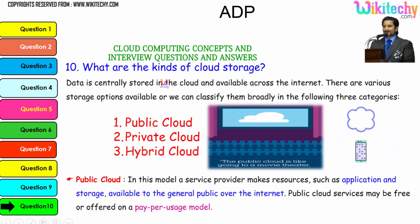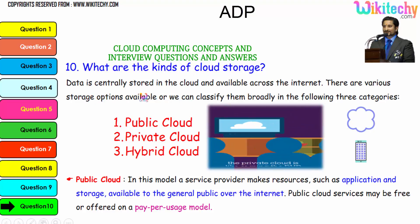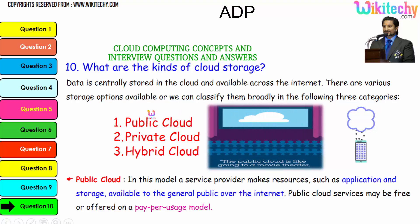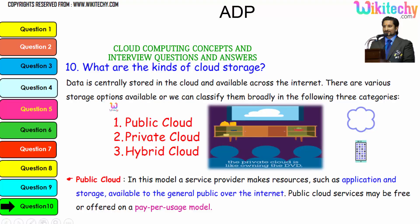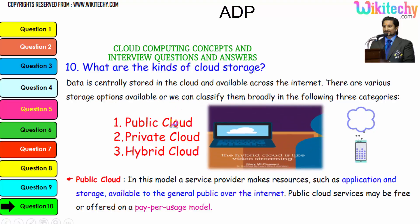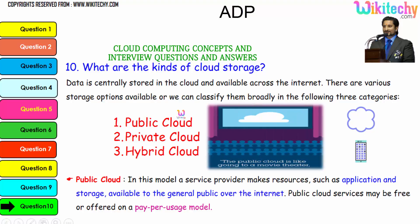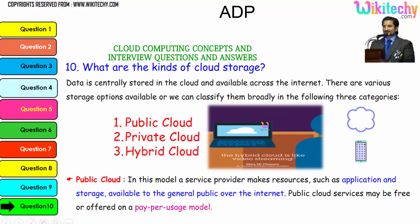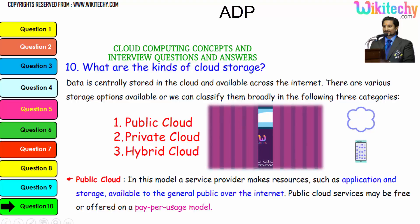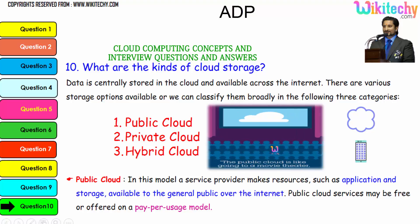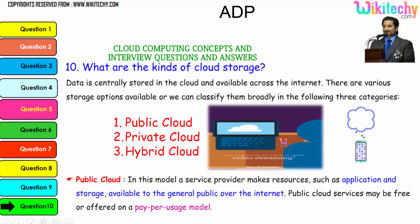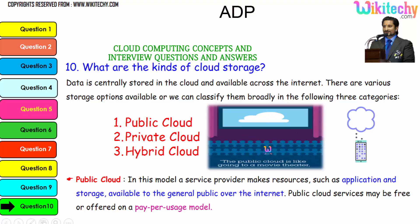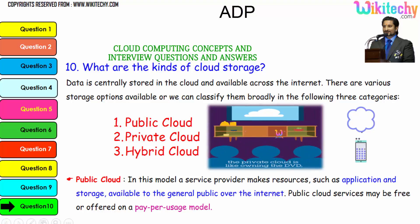Now let's talk about the kinds of cloud storage. Data is centrally stored in the cloud and available across the internet. There are three major storage options: public cloud, private cloud, and hybrid cloud. You can see the animated feature here. The public cloud is like going to a movie theater. Private cloud is like owning a DVD in your home. Hybrid cloud is like video streaming — a mix of private and public.